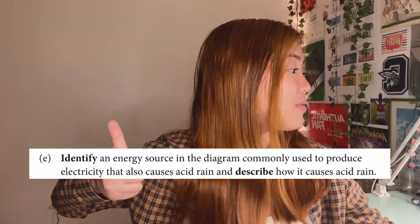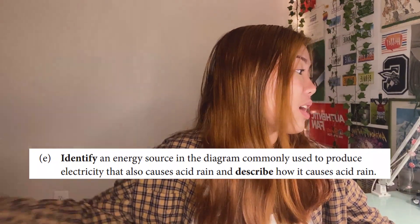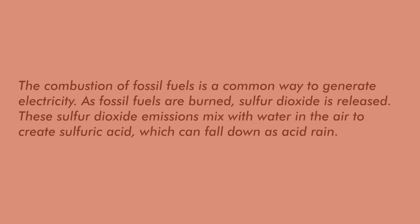The next task verb is "describe." With describe, you provide the characteristics of a specific topic — a solution, method, process, etc. Question D is a double whammy because it includes both identify and describe: first, identify an energy source in the diagram that produces electricity and also causes acid rain; then describe how it causes acid rain. This will typically account for two points, so make sure you respond to both parts. A sample response: "The combustion of fossil fuels is a common way to generate electricity. As fossil fuels are burned, sulfur dioxide is released."